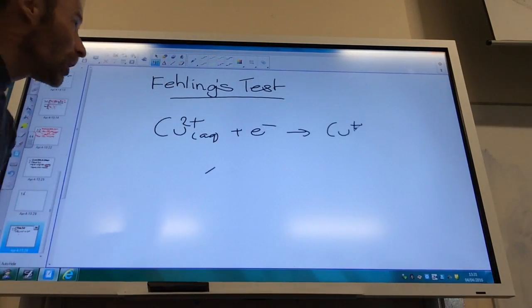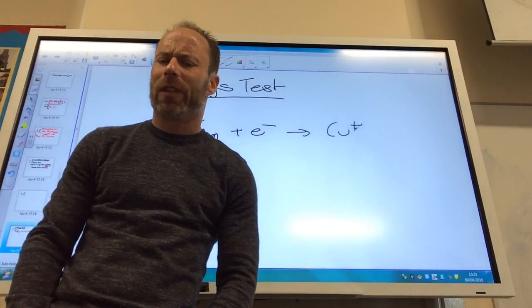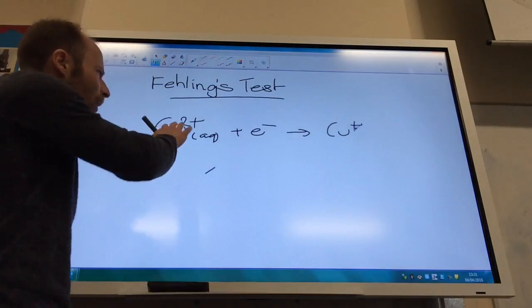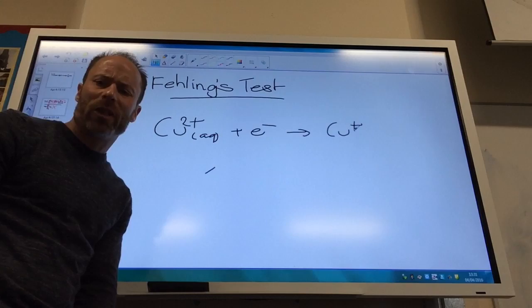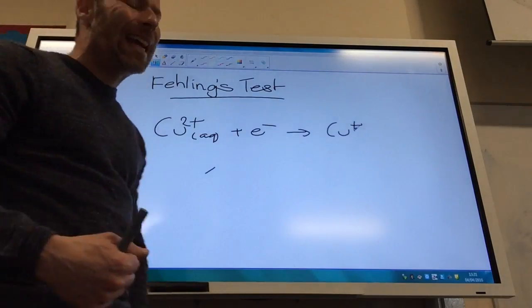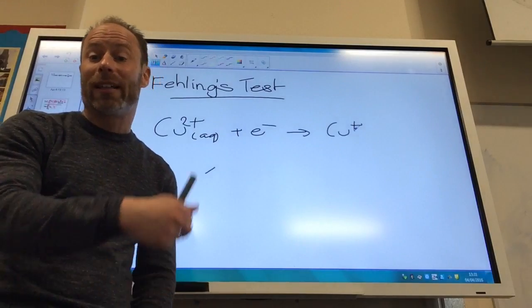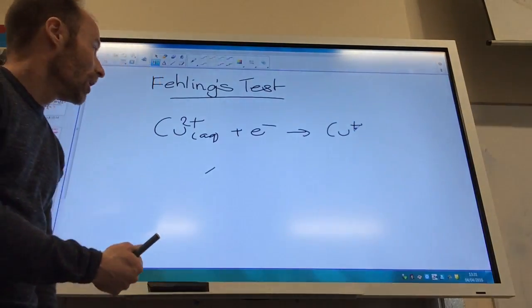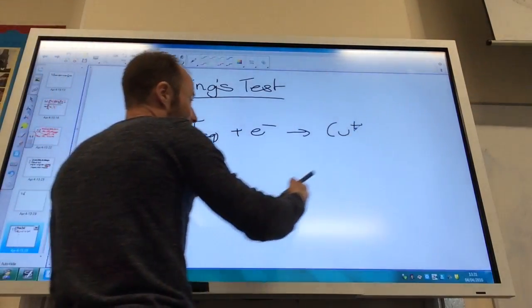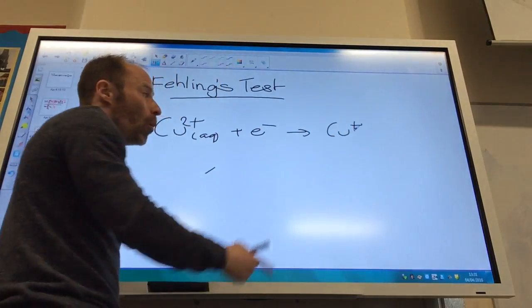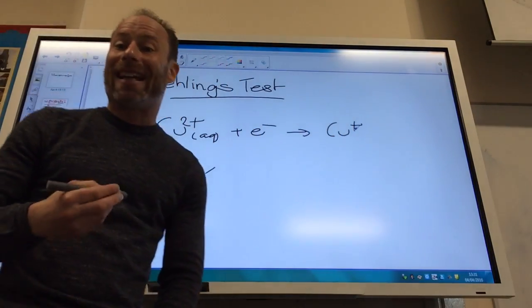Fehling's test works in a similar way. You don't need to know the details so much of the reaction for this one. You start off with copper two plus solution, which is blue. And again, aldehydes are oxidized. This oxidizes the aldehyde, so the copper is reduced. The copper two plus is reduced to copper one plus.